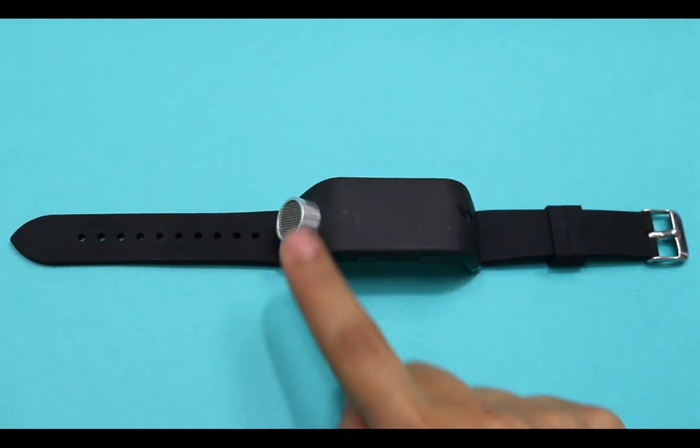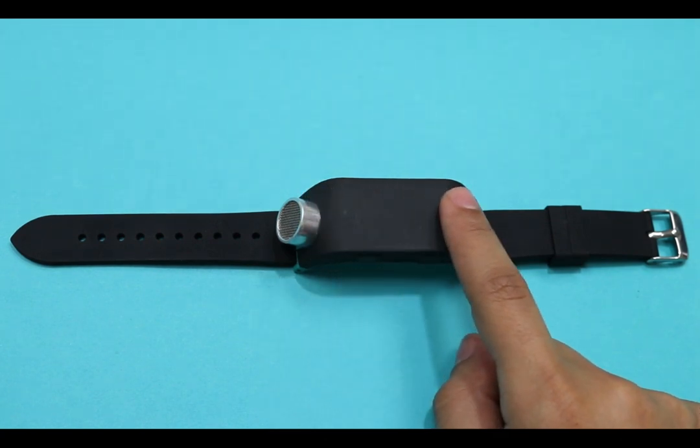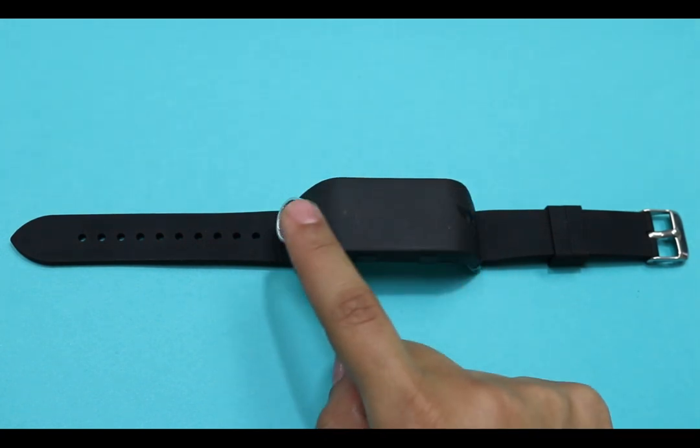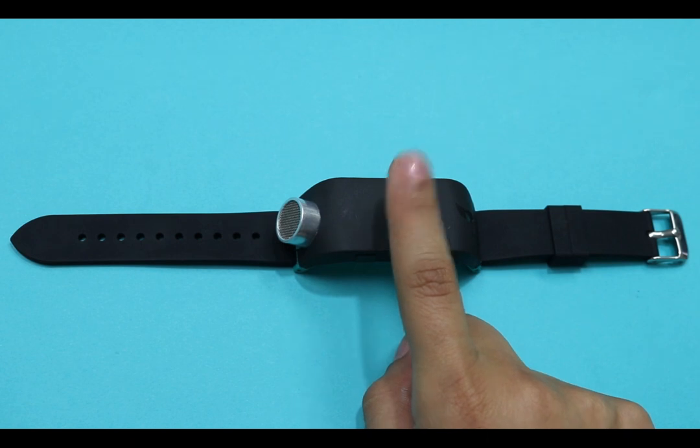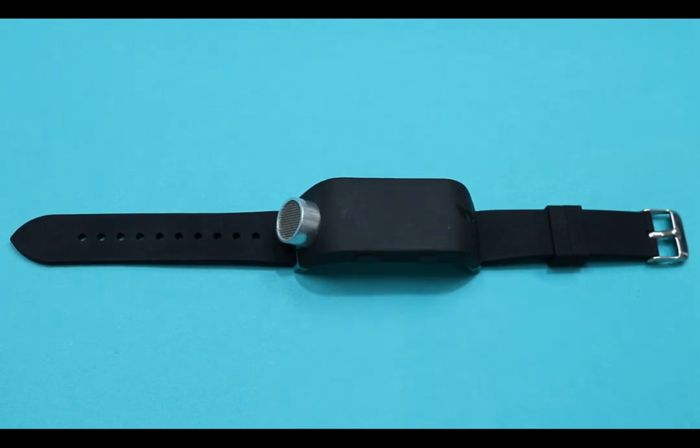Touchpath: The touchpath is the flat surface of the Sunuband. Swiping along the touchpath and tapping allows you to navigate and select functions or apps on the Sunuband.